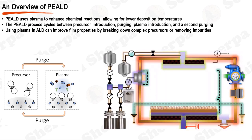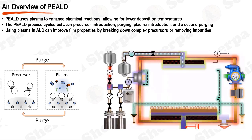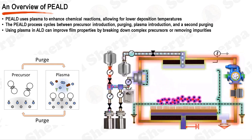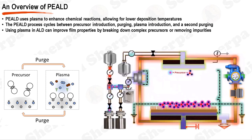The actual deposition process in PEALD involves several key components. A precursor from a precursor canister is introduced into the ALD reactor chamber via an ALD injector. The precursor is often vaporized before it enters the chamber. A mass flow controller, MFC, regulates the amount of precursor introduced. The delivery of the precursor is facilitated by a carrier gas, usually nitrogen, N2, which helps spread the precursor evenly across the substrate. This mixture passes through a showerhead, ensuring even distribution of the precursor over the substrate. Once inside the chamber, the precursor undergoes adsorption onto the substrate surface.